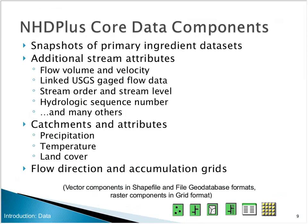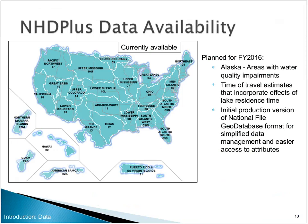For core data, I'll just hit the major bullets. We use the three primary ingredient datasets to produce additional stream attributes including flow volume, velocity, and many others, along with a whole library of catchment attributes and flow direction and flow accumulation grids. We have data for the lower 48, many of the islands, Puerto Rico, U.S. Virgin Islands, and some of the trust territories.